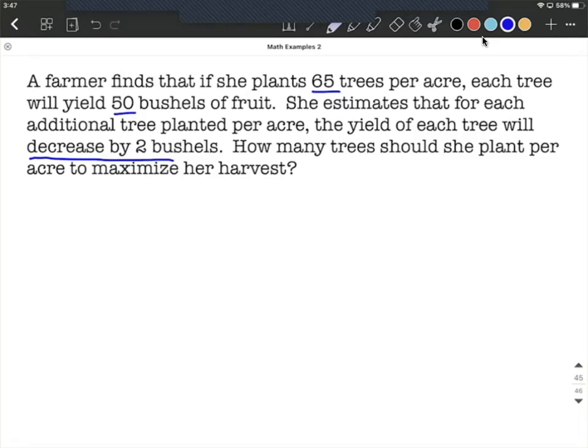In this situation, it feels like we're connecting together two components. We have number of trees per acre, and we have number of bushels produced per tree. Because we're told that for each additional tree we plant per acre, we're going to decrease by two bushels, the number of bushels is going to be dependent on the number of trees. So I'm going to say that X is going to be our number of trees, and Y is going to be our number of bushels.